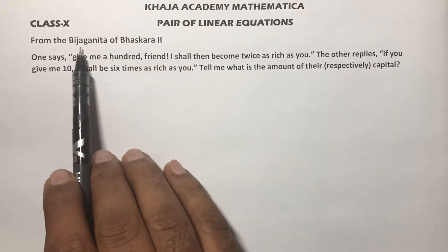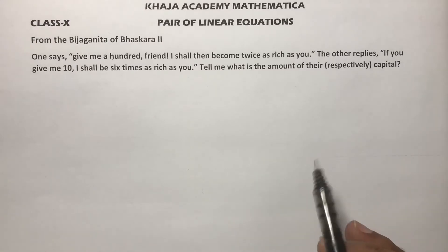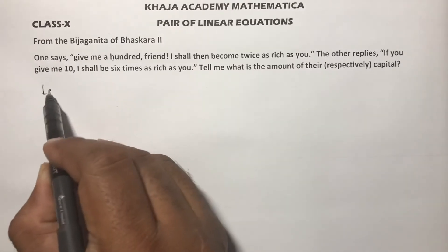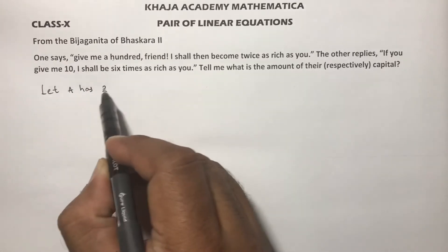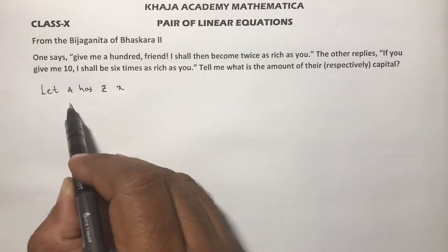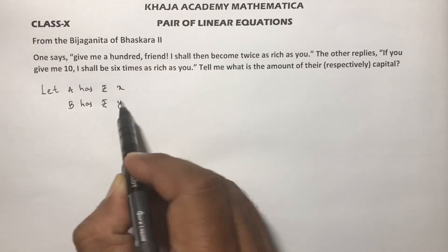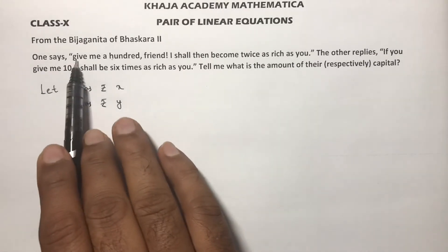This problem is taken from the Bijaganita of Bhaskara II. Let the friends be named A and B. Let A has rupees x and B has rupees y.